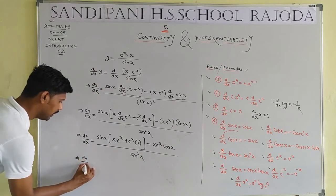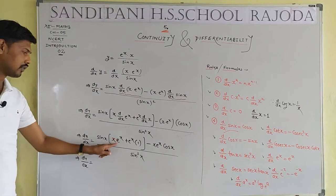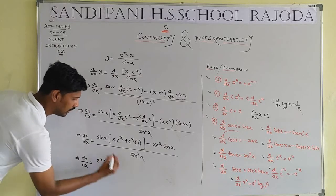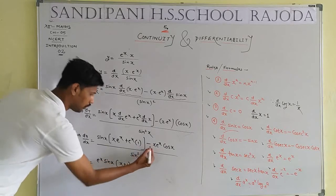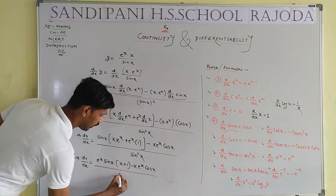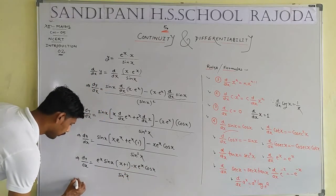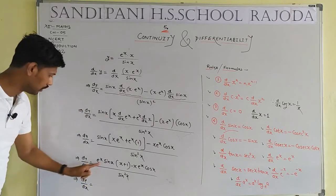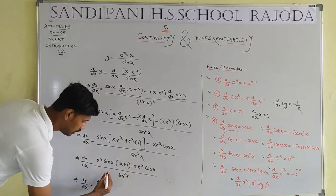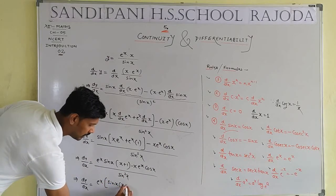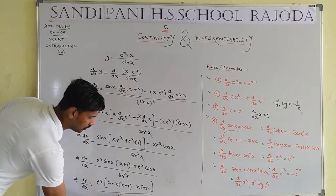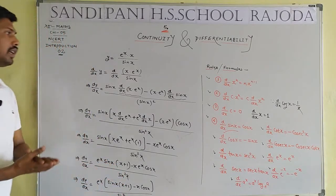Taking e^x as a common factor from numerator: dy/dx = e^x[sin x(x + 1) − x · cos x] / sin²x. This is the final answer for this combined multiplication and division problem.